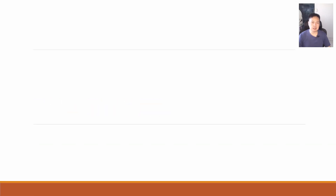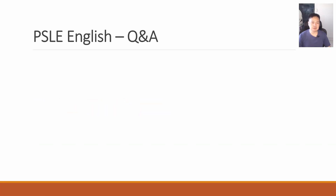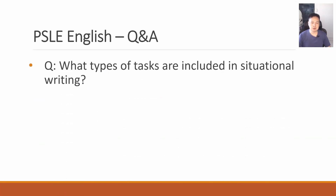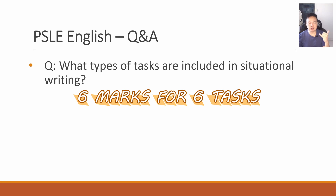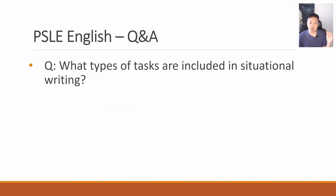For situation writing, here is the first question: what types of tasks are included in situation writing? At the primary level, there are only 6 points for the task. So just make sure that you go to the visual, identify the right information, do the working, underline or highlight, and there should be 6 details for 6 marks.